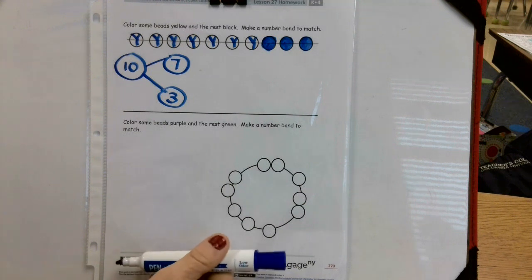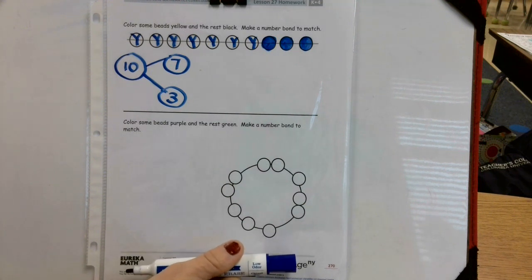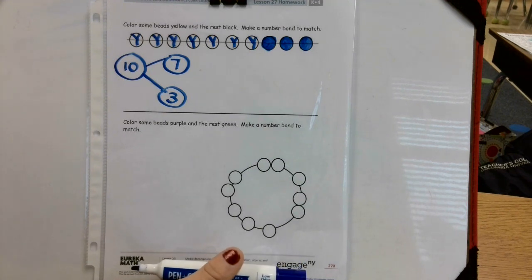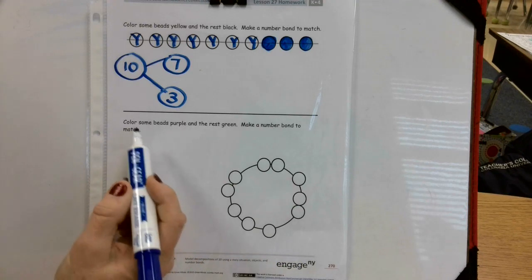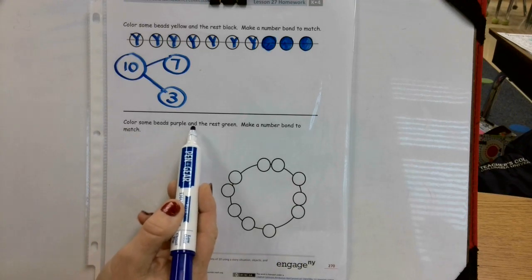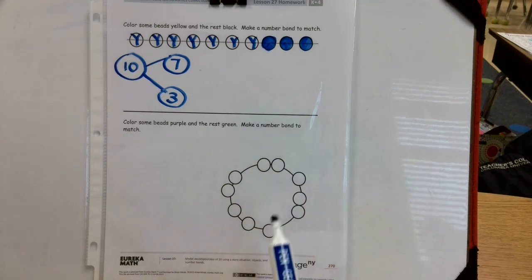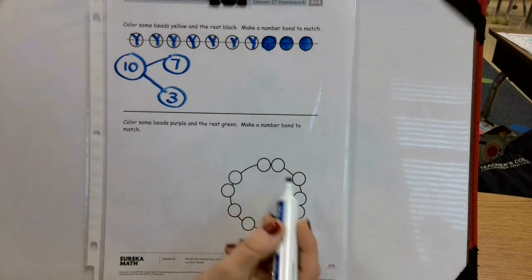So let's look at the bottom of our paper, and this time we want you to do this at home. Draw it on your paper if you have paper and send it to us so we can see what you did with your number bond. We're going to get started together. Color some beads purple and the rest green, make a number bond to match. So the first thing we need to do is let's count how many beads we have to make the number bond.